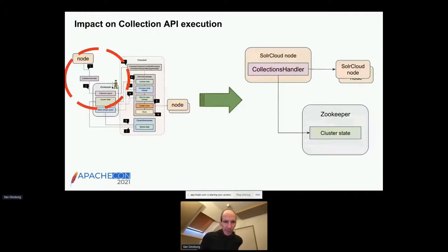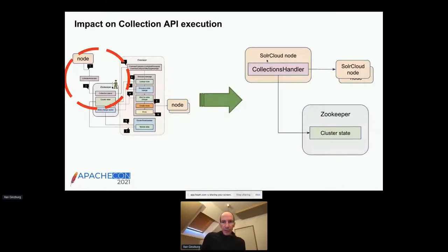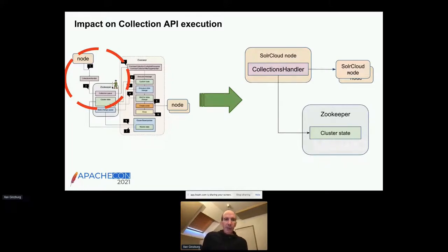Going back to the initial interaction diagram: previously, an API request arrived on a node and went through multiple Zookeeper queue iterations. Now instead, the SolrCloud node receives the API request, handles it in the collections handler, performs all cluster state updates directly against Zookeeper, interacts with distributed locks, and talks to other SolrCloud nodes the same way — but those nodes also interact with Zookeeper directly rather than going through the overseer.